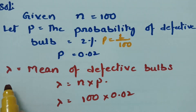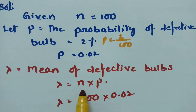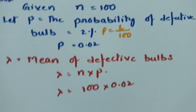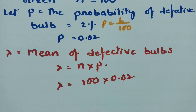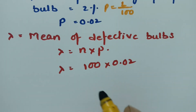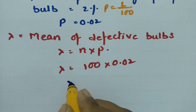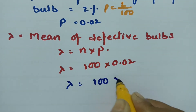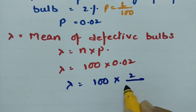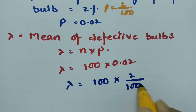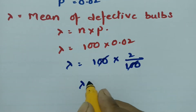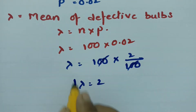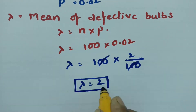The mean is equal to n into p. The n value is 100 and p is equal to 0.02. Therefore, lambda is equal to 100 into 2 by 100. If I cancel this, lambda is equal to 2.